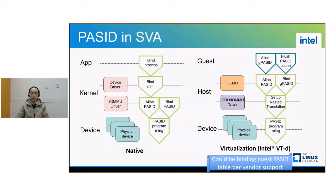Let's see the PASID usage in shared virtual addressing. The diagram on the left shows the steps to set up SVA usage in native. The application will issue a bind process request which goes into the device driver and then flows into the IOMMU driver. The IOMMU driver will allocate a PASID and bind it with the CPU page table of the current process by creating a PASID entry in the PASID table. Then the PASID is programmed to the hardware device.